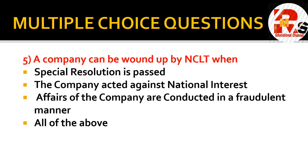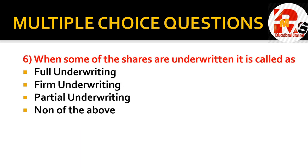Next: a company can be wound up by NCLT — National Company Law Tribunal, which is the regulatory body for companies. Companies can be wound up by NCLT when: a special resolution is passed, the company acted against national interest, or the affairs of the company are conducted in a fraudulent manner. The correct answer is all of the above.